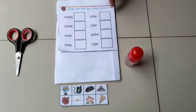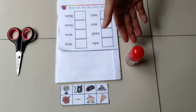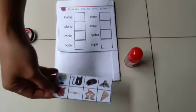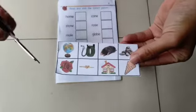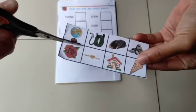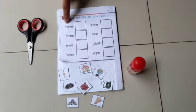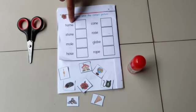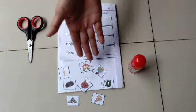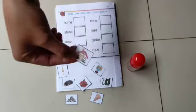The last page today is page 16. Don't forget to prepare your scissors and glue, and also you have to cut the pictures at the back of your book. Follow the line and cut it neatly. The first word we have: home. Where is the home? So you can find it and then stick it on the box.